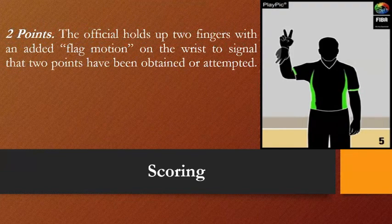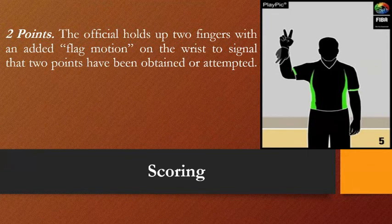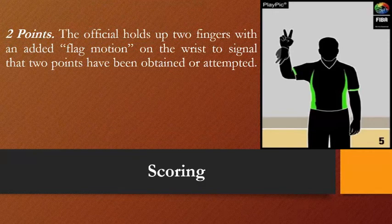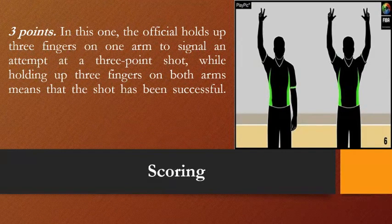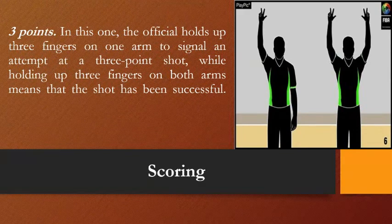For two points, the official holds up two fingers with an added plug motion of the wrist to signal that two points have been obtained or attempted. Any kind of shot — a down shot, layup, or jump shot — converts for two points unless attempted from the three-point shot area. For three points, the official holds three fingers on one arm to signal an attempt at a three-point shot, while holding up two fingers on both arms means the shot has been successful.